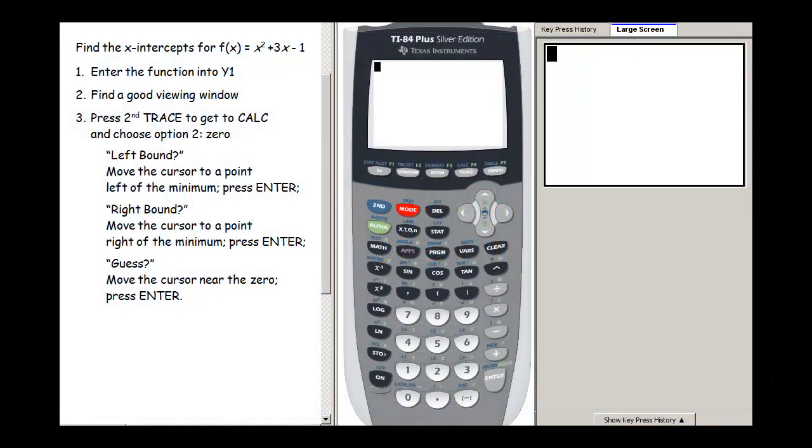In this video I'm going to show you how to find the x-intercepts or zeros for a function. The function I'm looking at is f(x) = x² + 3x - 1. The first thing I need to do is graph that function.